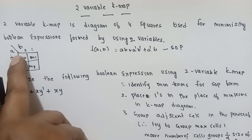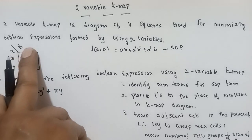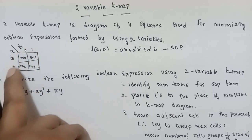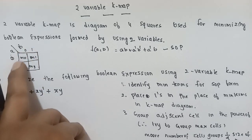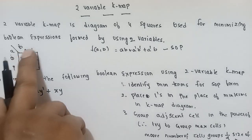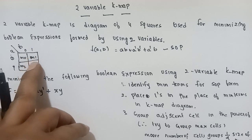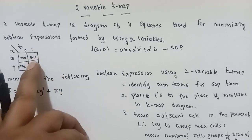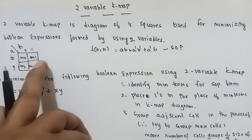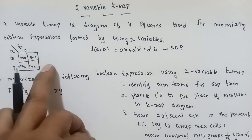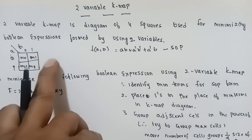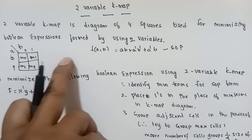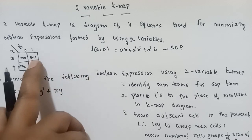One side is one variable and the other side is the next variable. The variable values are 0 and 1, and the next side is also 0 and 1. For the sum of products form, the minterms with two variables cover four minterms: M0, M1, M2, M3.